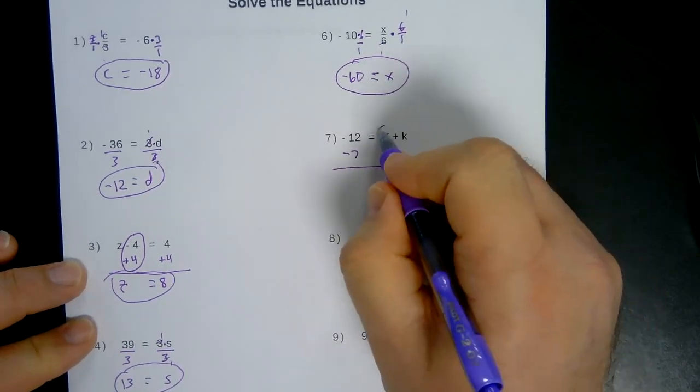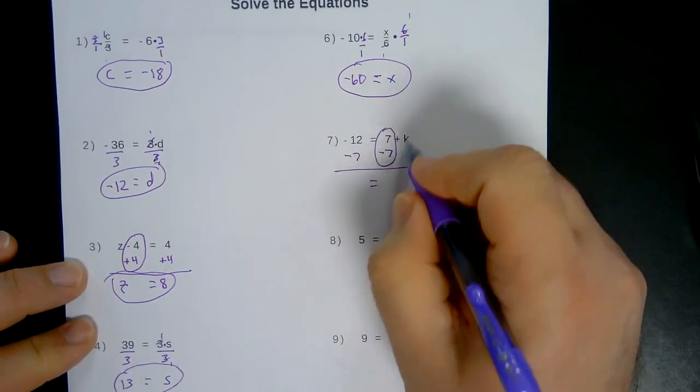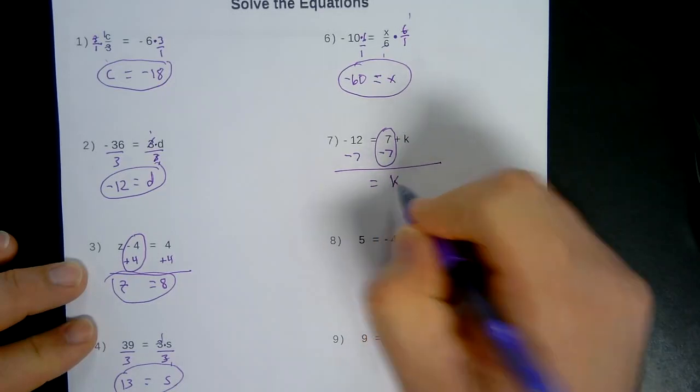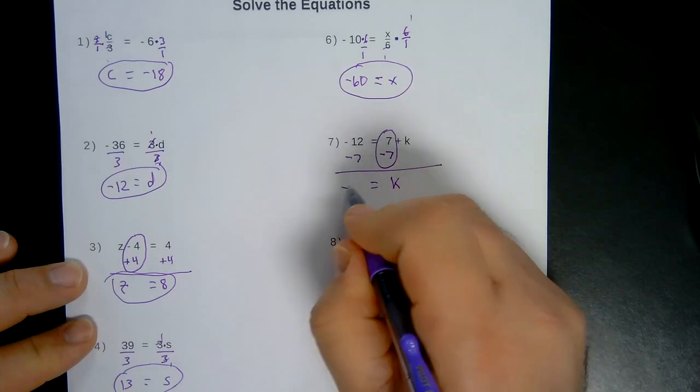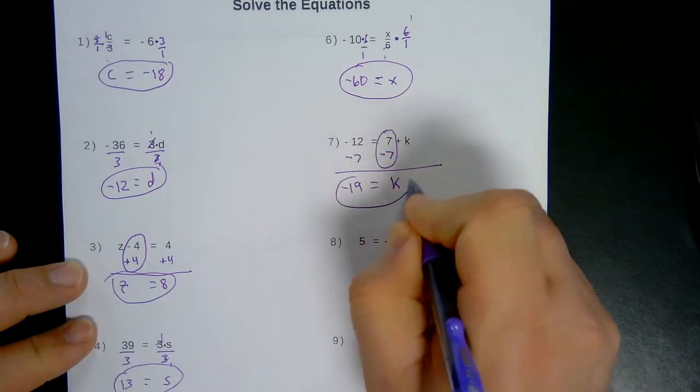Okay, 7 minus 7. There's my 0. On the right, we have a positive K, which is what we want. And negative 12 minus 7, negative 19.